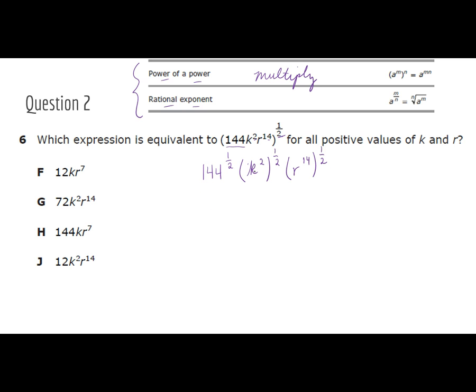So let's then take our power to a power. Well, we'll leave the 144 for now. We'll come back to it. Now I've got K to the second to the one half. Remember, that means we multiply those together. Two times a half. And then we've got R and I've got 14 times a half.